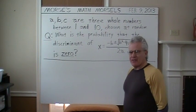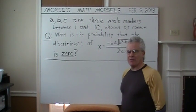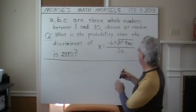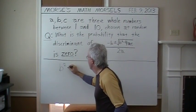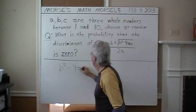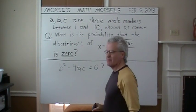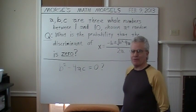So the question is, if you were to pick whole numbers A, B, and C between 1 and 10 at random, what is the probability that this expression, B squared minus 4AC, is zero? Something to think about for a few seconds. Pause the video or whatever.